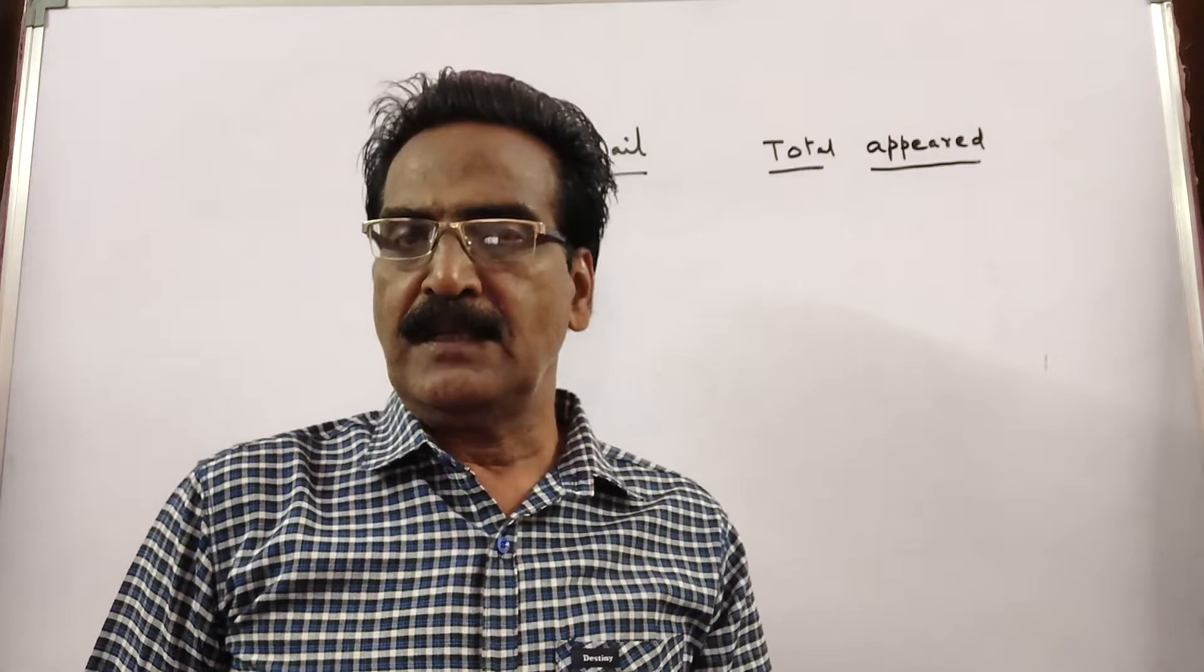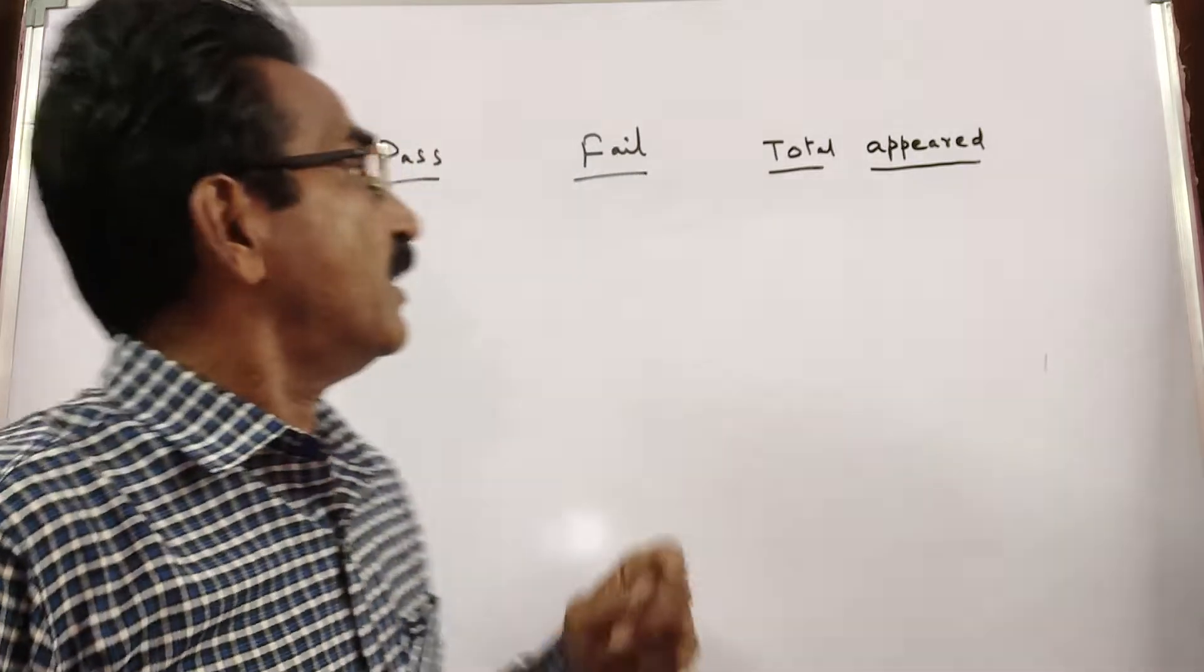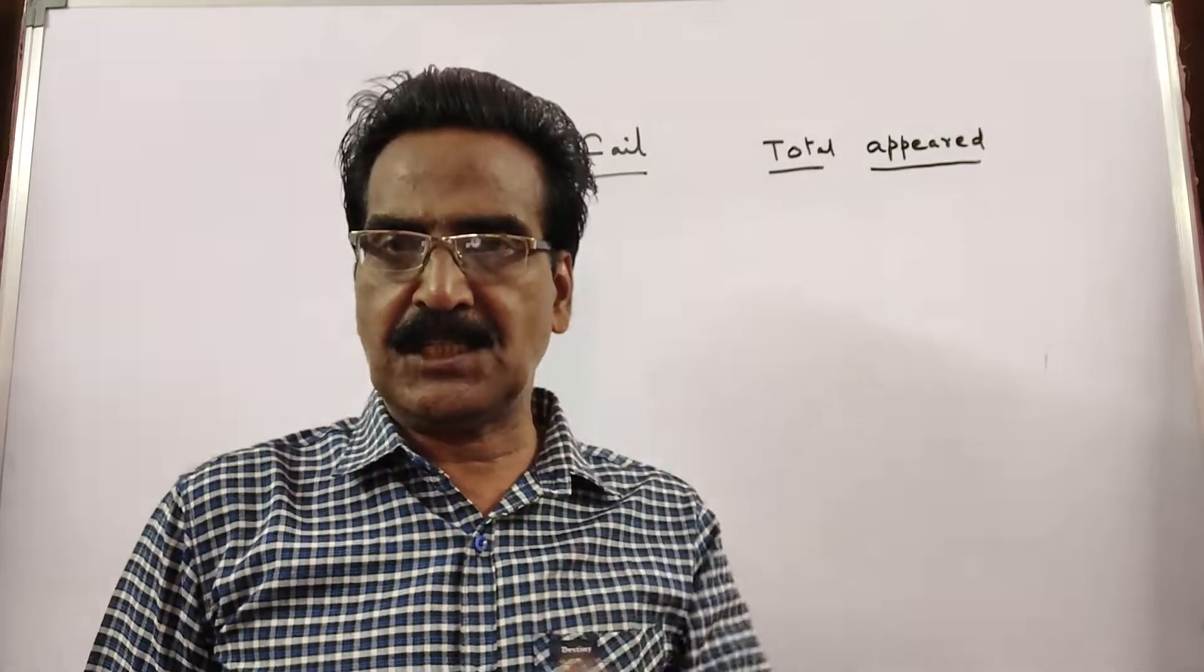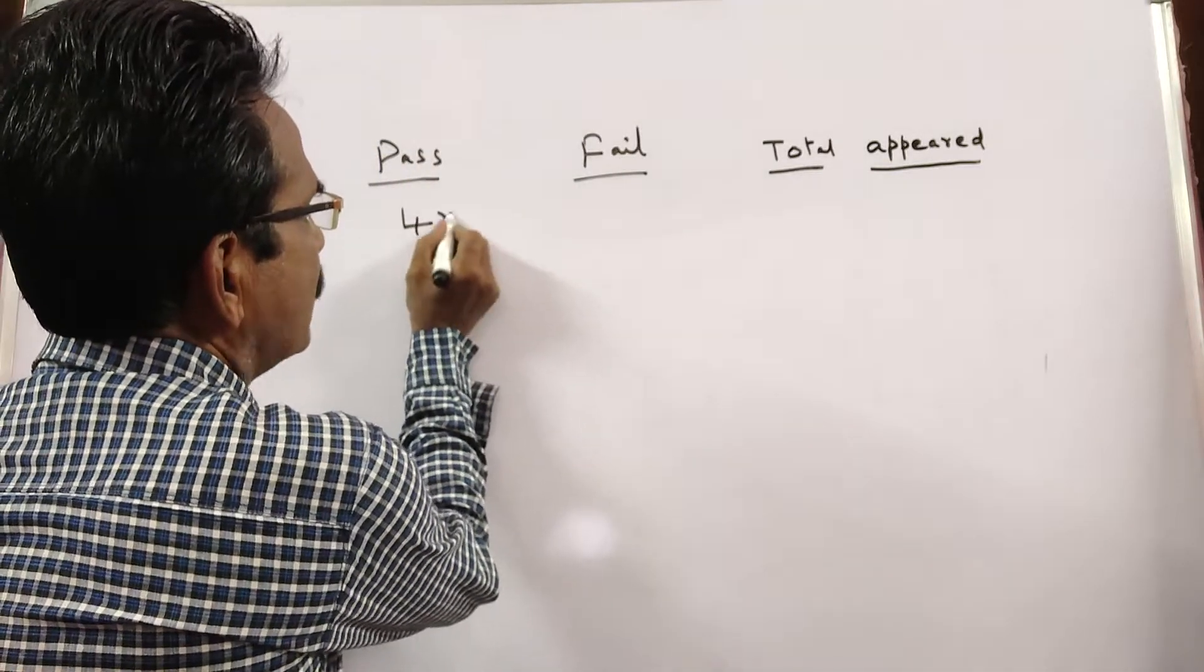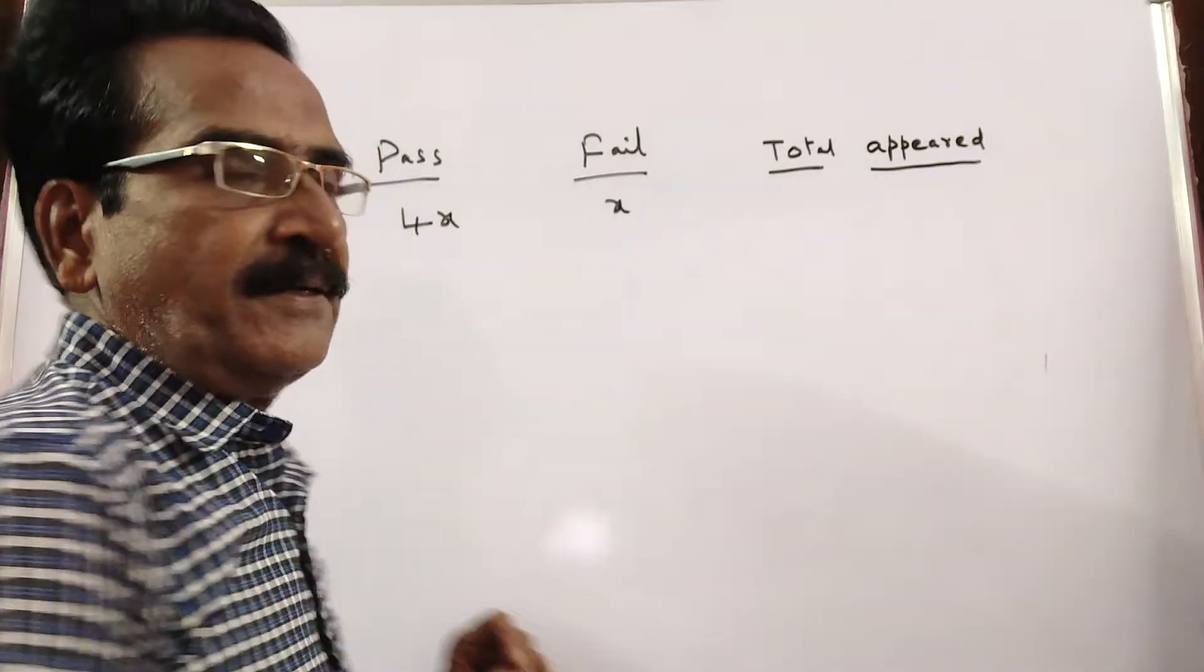In an exam, the total ratio of number of passes and failures is given as 4 to 1. That means 4x people passed and 1x people failed.